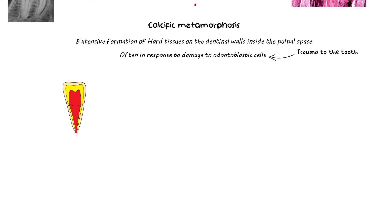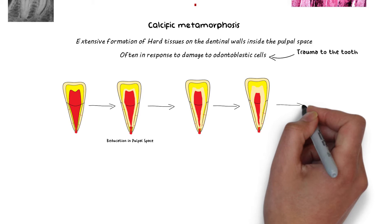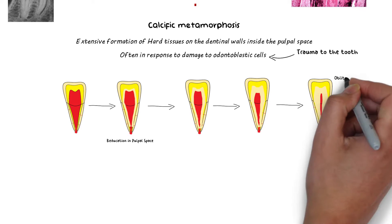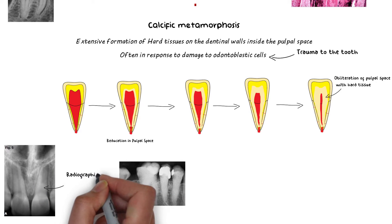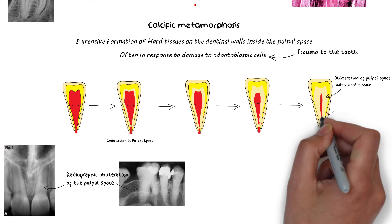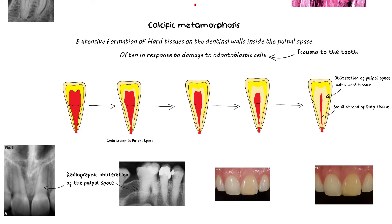In calcific metamorphosis there is a reduction in coronal space followed by a gradual narrowing of the canals on the radiograph, which is also the first sign of calcific metamorphosis. As the irritation increases, the amount of calcification may also increase, eventually causing the pulp chamber and the canals to be filled with hard tissue, leading to a complete or partial radiographic obliteration of the pulp chamber and its canals. This causes a yellowish discoloration of the crown as a manifestation of calcific metamorphosis, which is a very important clinical sign used to diagnose it.